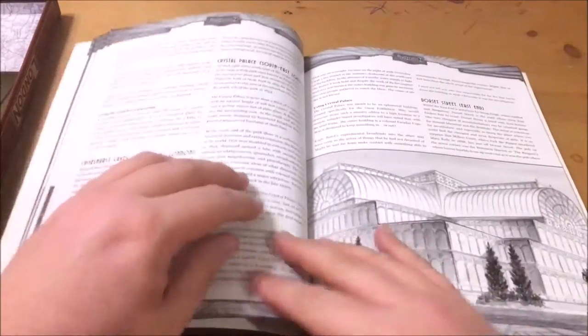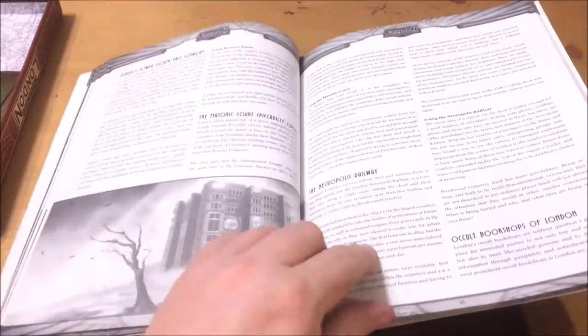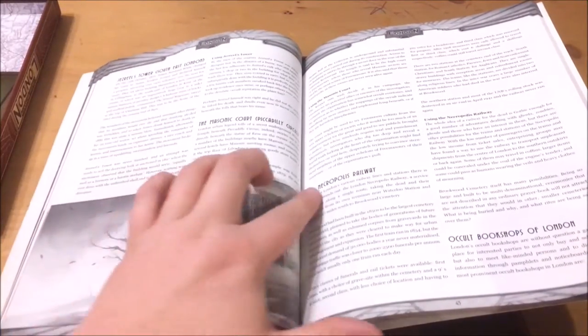It then goes on to detail interesting places around London like Crystal Palace and the Imperial War Museum but also some of the strange places like Jezreel's Tower, the Masonic Court and the Necropolis Railway.